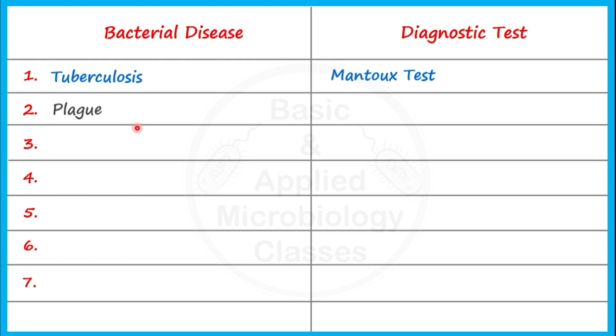Let's see the second disease: plague, also called black death, which is caused by Yersinia pestis. For detection of plague, Wayson's stain test is performed.